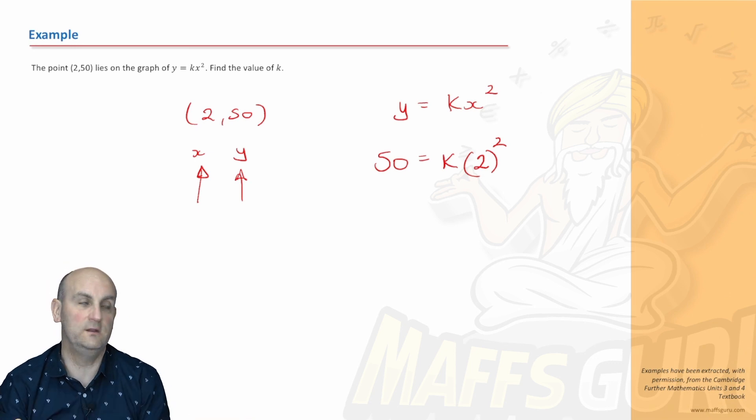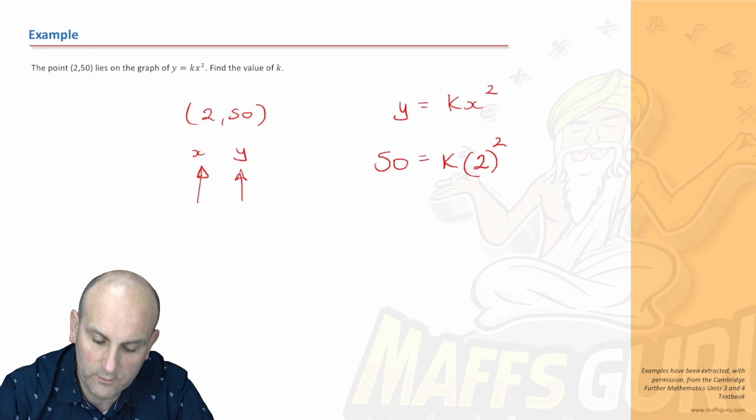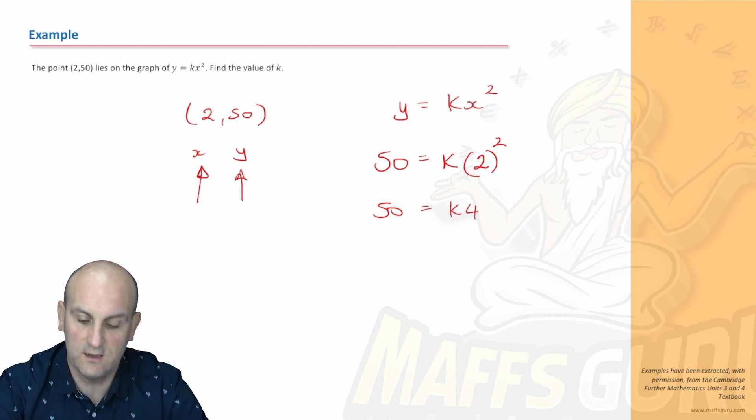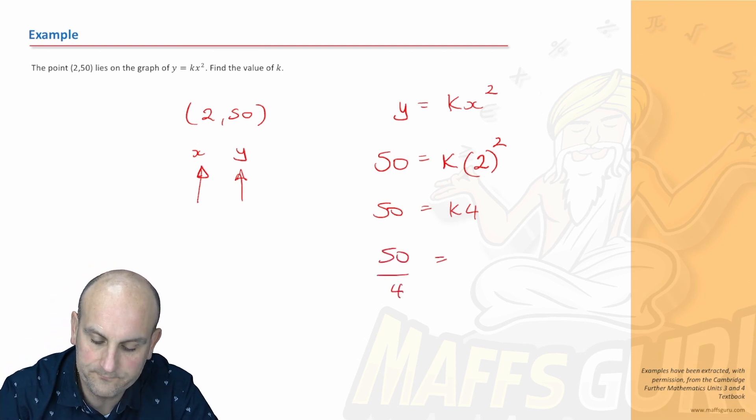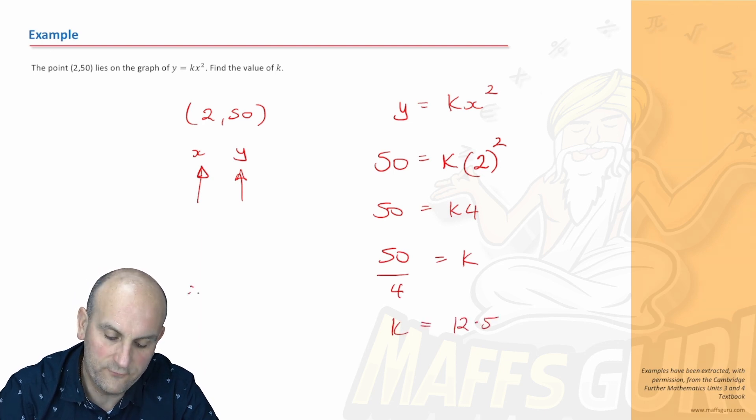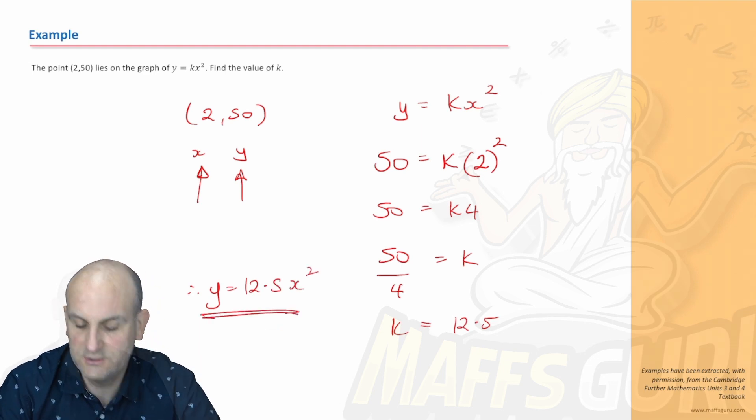Can I find the value of k? Yes, because it is the only thing. I could use my CAS, I could use the solve function, but let's just see what happens. We know what two squared is. Two squared is two times two, so that's four. So we now know that between the k and the four is a kissy kissy, which is a times. So I can divide both sides by four. That gives me that k is equal to 12.5. So therefore, my function or my graph actually has the equation y equals 12.5x squared.